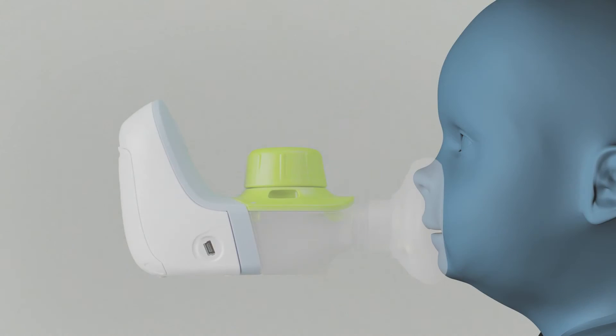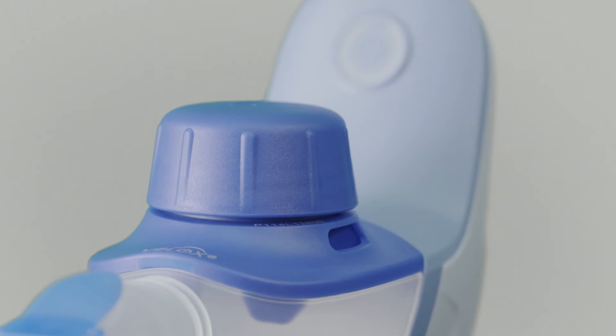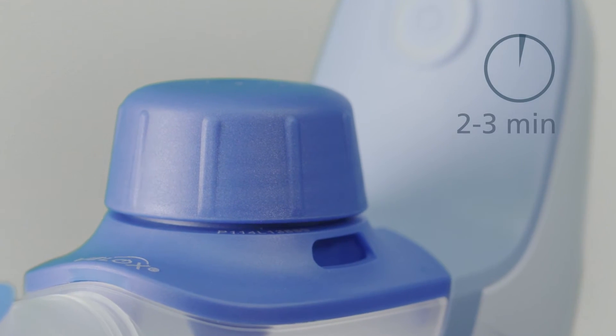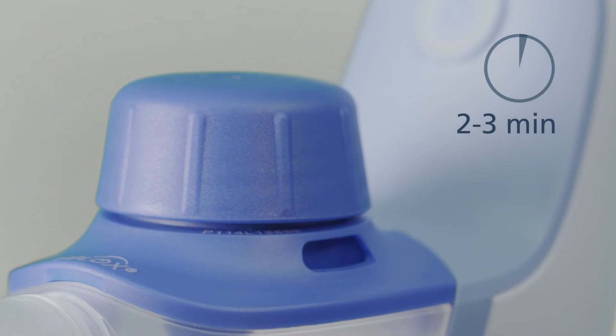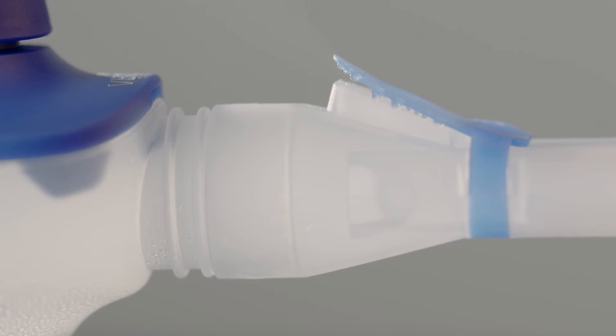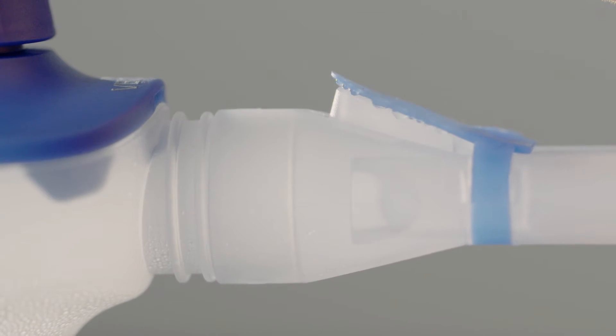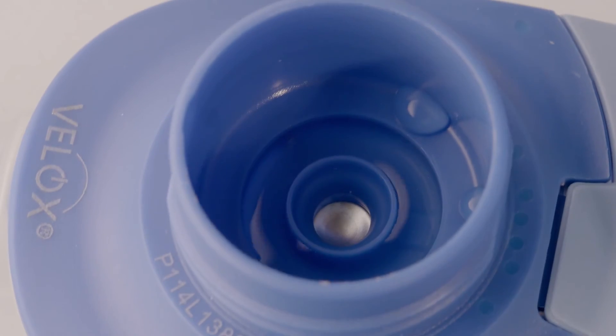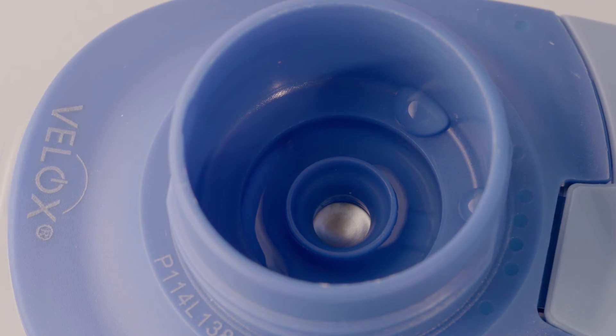If a small child is inhaling with Velox Junior, please ensure that the mask sits snugly on their face. It generally takes around 2 to 3 minutes to inhale 2.5 milliliters. The session is finished when no more aerosol comes out of the expiratory valve on the mouthpiece. The correct amount of medication is inhaled with the device. It is normal that some of the solution is left over.